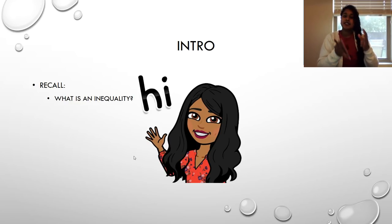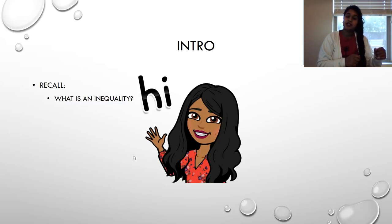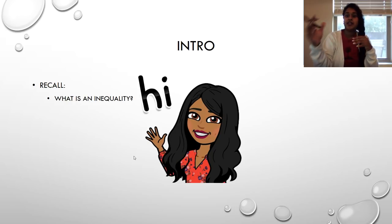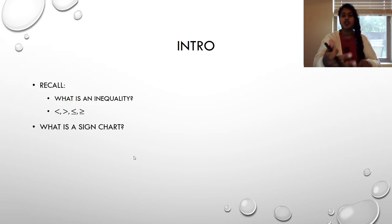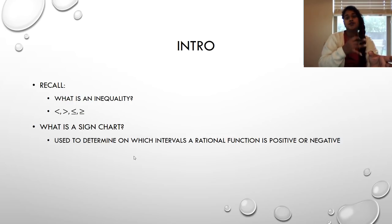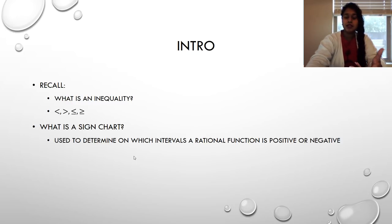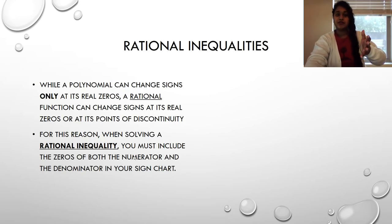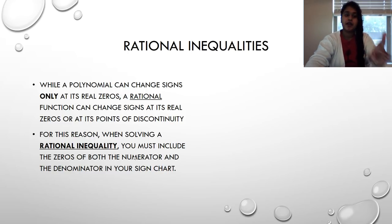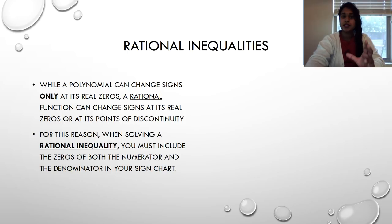We're going to do something very similar. We want to get everything to one side with a zero on one side, get it down so we can factor as best as possible. Then we're going to use that sign chart — that's the big difference between a regular solve and an inequality — where we test intervals for positivity and negativity.